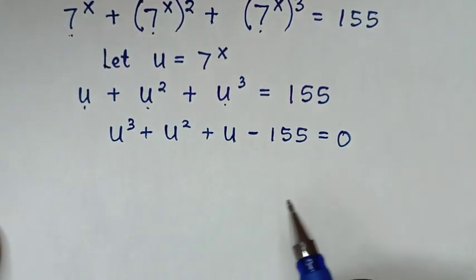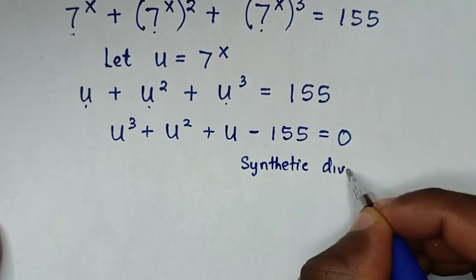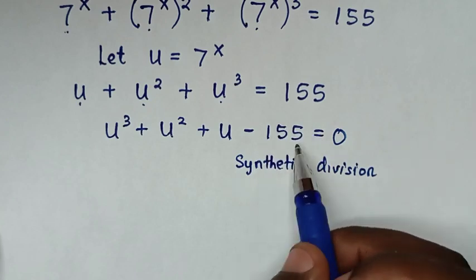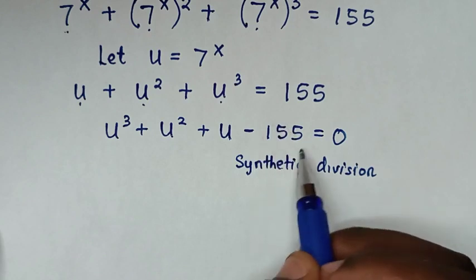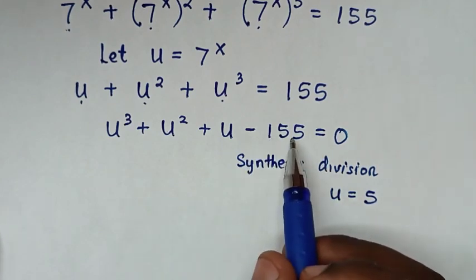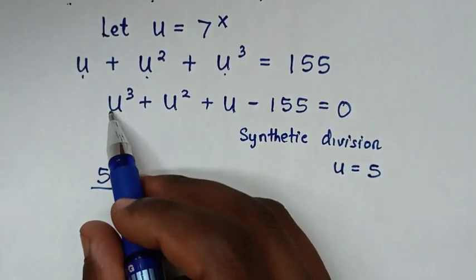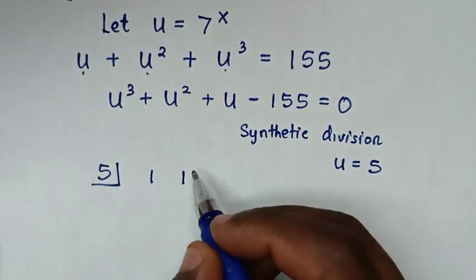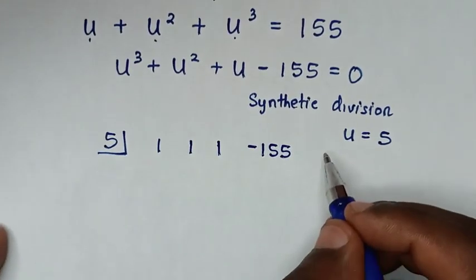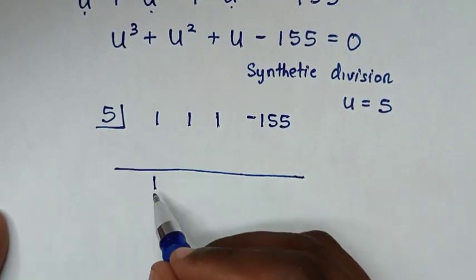We solve this cubic equation by synthetic division. Looking at the factors of 155, we test u equal to 5 since 5 can divide 155. Setting up the synthetic division, the coefficients of u power 3, u squared, and u are each 1, and the constant is negative 155. We bring down 1, and 5 times 1 is 5.